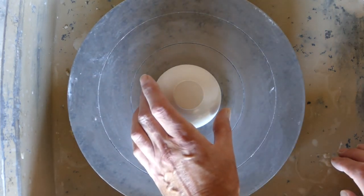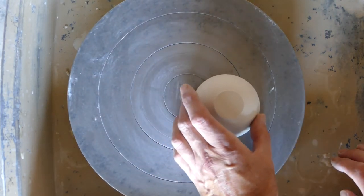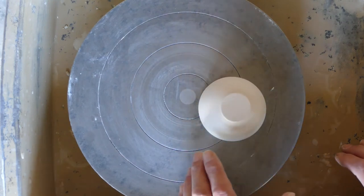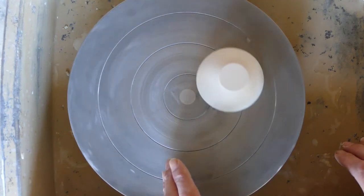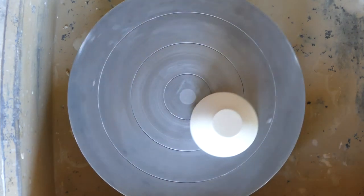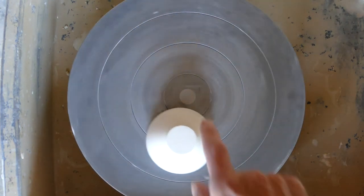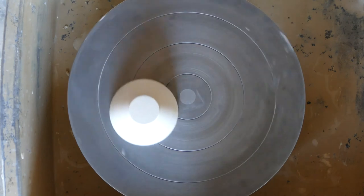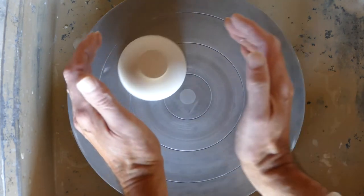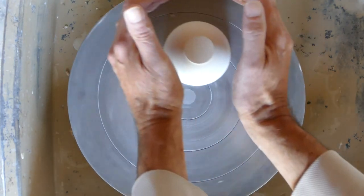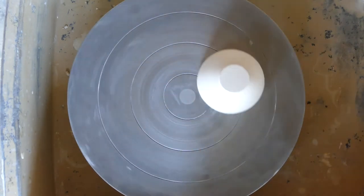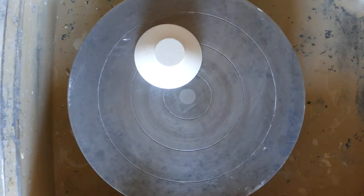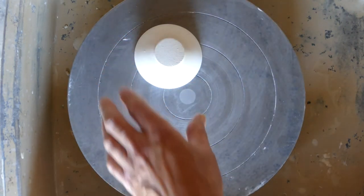Now if I move this bowl out from the center of the wheel—and obviously this is an exaggeration—as I rotate it you'll see it acts a bit like a satellite around the center of the wheel there. And if I put my hands around it now, you'll see they're really all over the place and the coning or centering like that would be very difficult indeed.